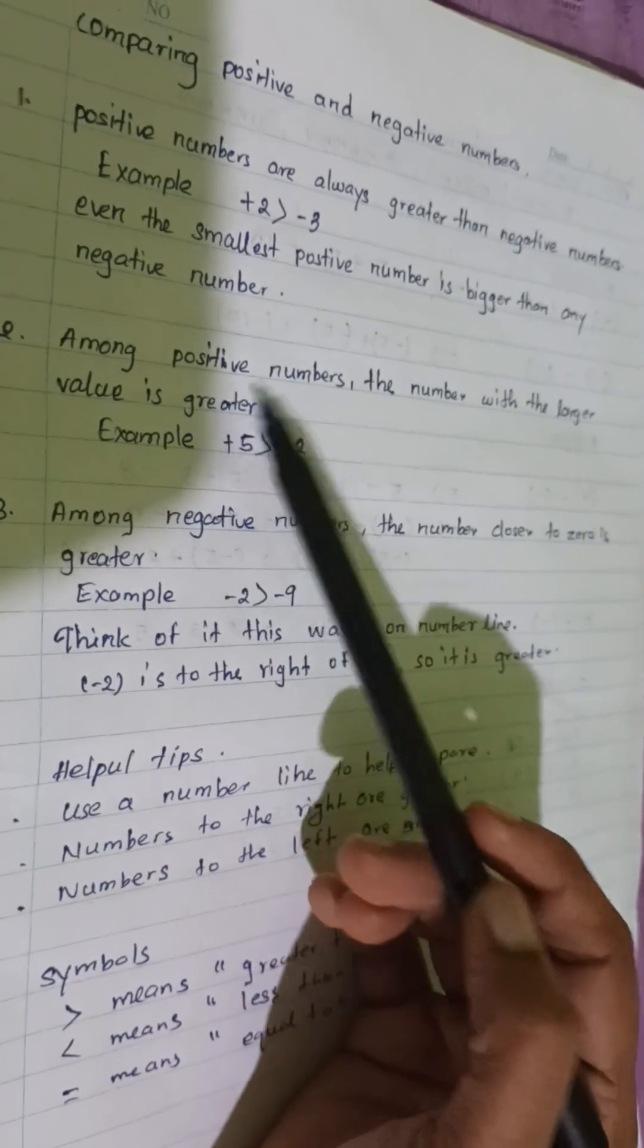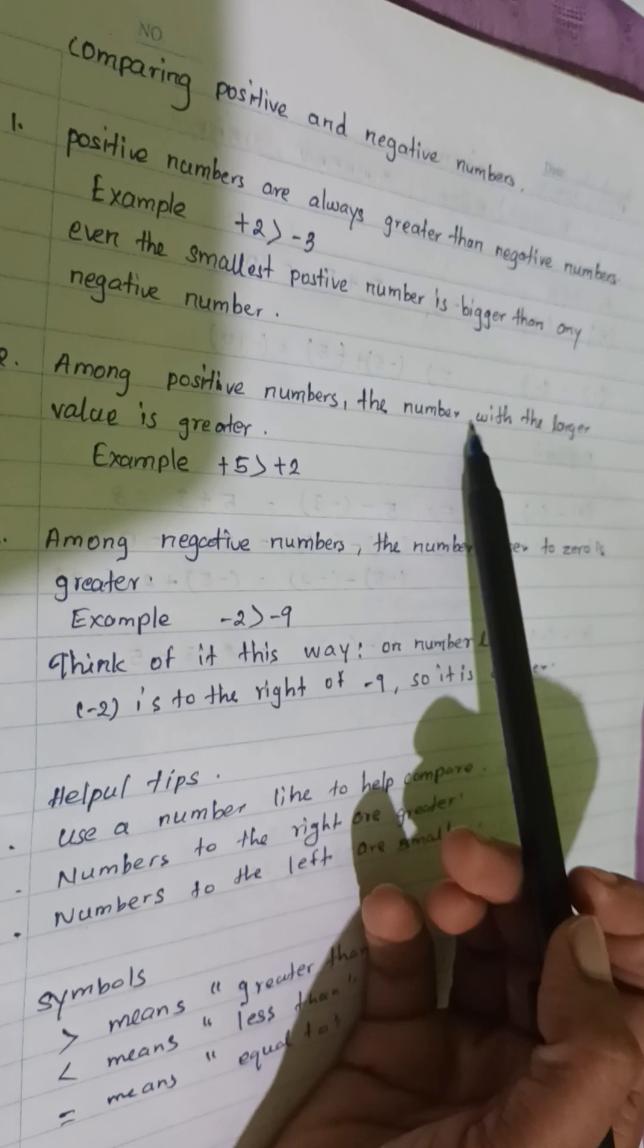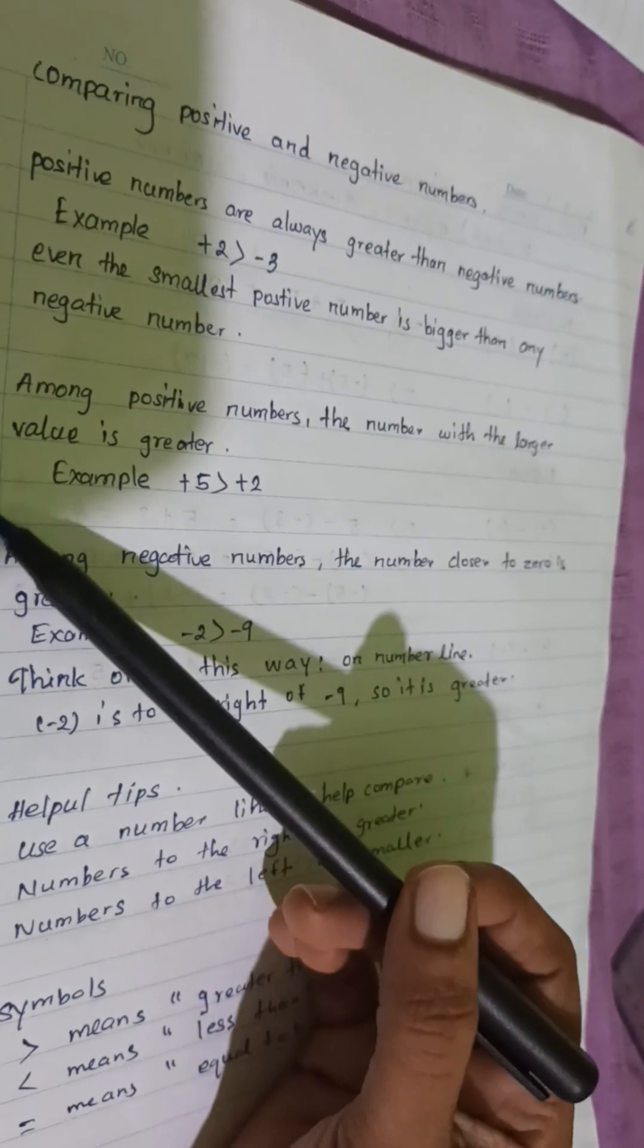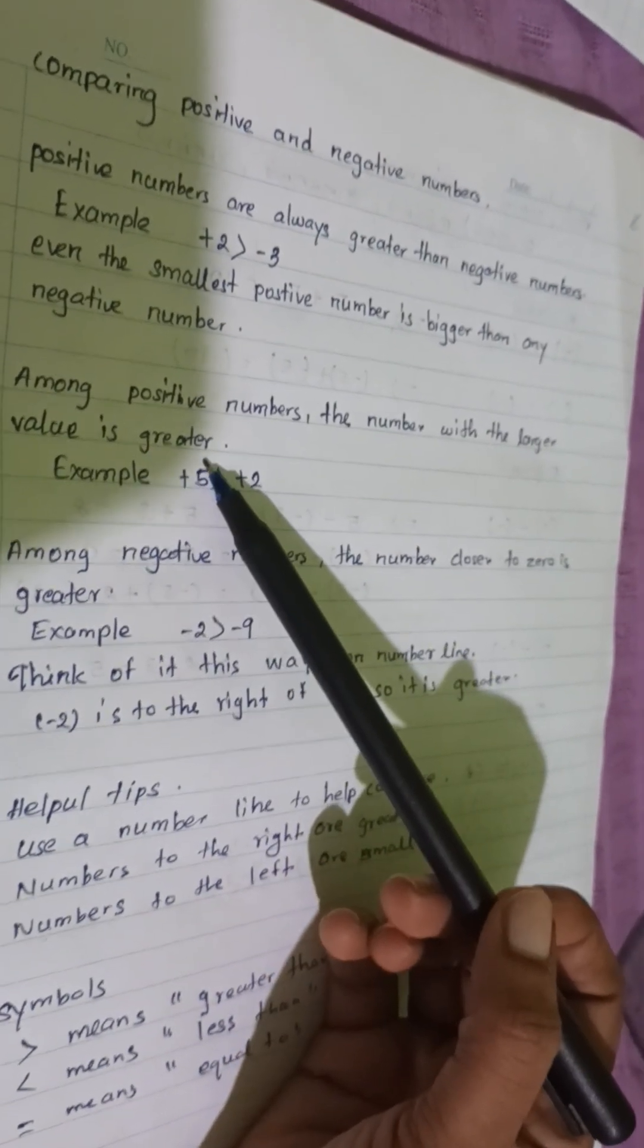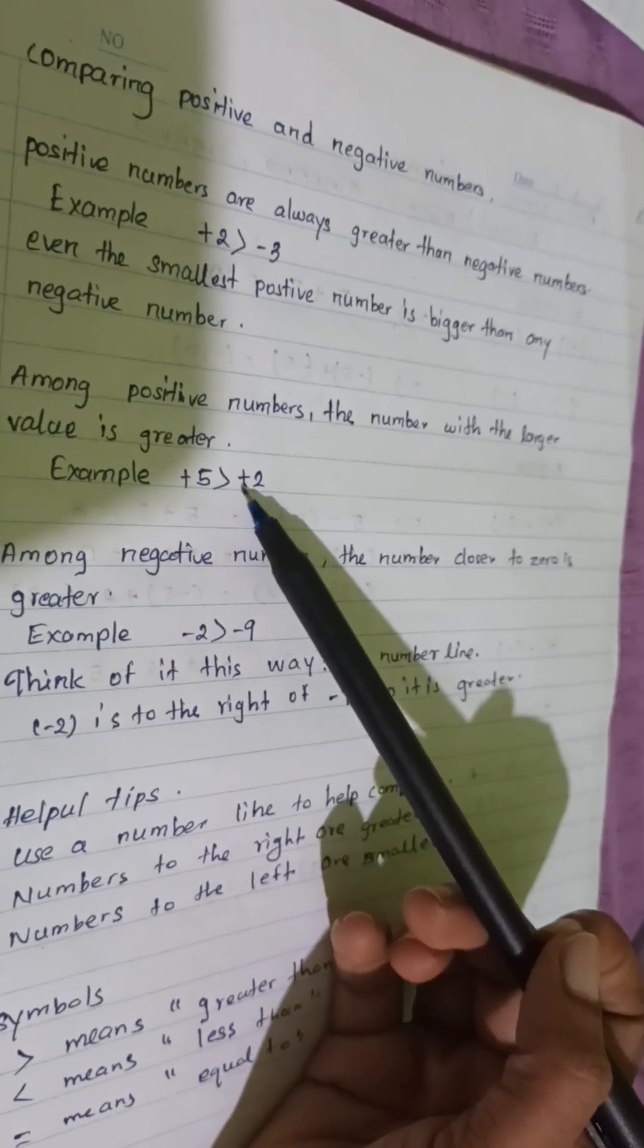Among positive numbers, the number with the larger value is greater. Example, 5 is greater than 2.